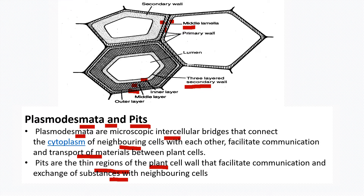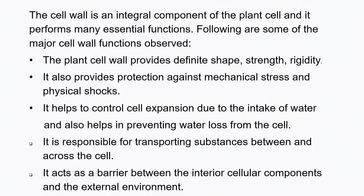To summarize the structure of cell wall: the cell wall may have three parts — middle lamella, primary wall, and secondary wall. In the secondary wall as well as middle lamella, there may be two structures — plasmodesmata and pits. Plasmodesmata and pits are functionally the same but structurally different. Let us now discuss the functions of cell wall.